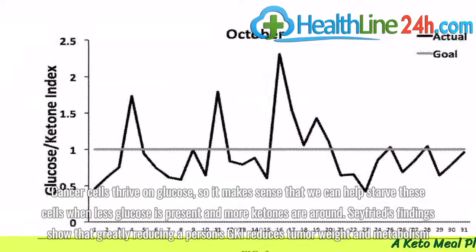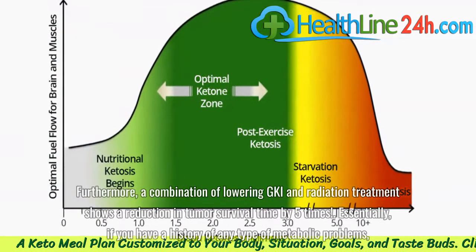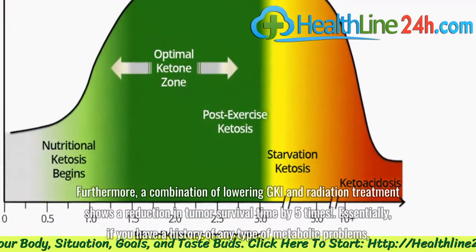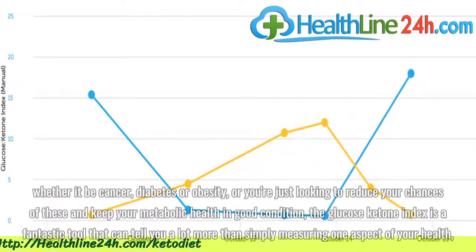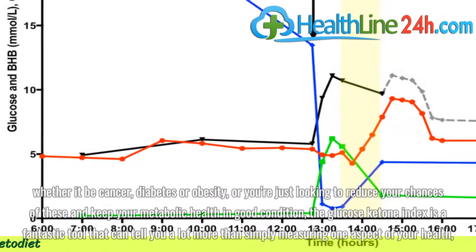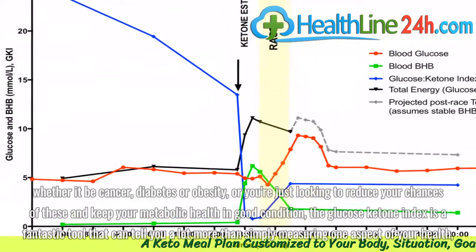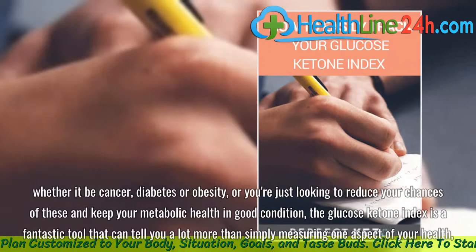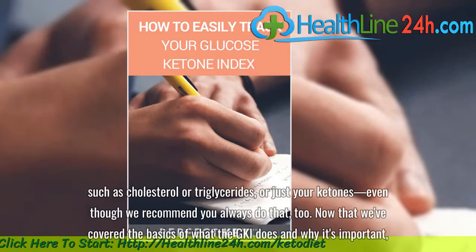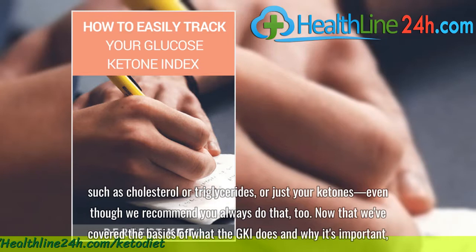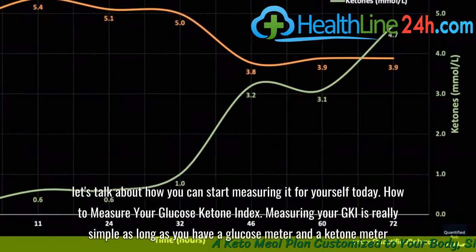Seyfried's findings show that greatly reducing a person's GKI reduces tumor weight and metabolism. Furthermore, a combination of lowering GKI and radiation treatment shows a reduction in tumor survival time by 5 times. Essentially, if you have a history of any type of metabolic problems — whether it be cancer, diabetes, or obesity — or you're just looking to reduce your chances of these and keep your metabolic health in good condition, the glucose ketone index is a fantastic tool that can tell you a lot more than simply measuring one aspect of your health, such as cholesterol or triglycerides, or just your ketones, even though we recommend you always do that too. Now that we've covered the basics of what the GKI does and why it's important, let's talk about how you can start measuring it for yourself today.